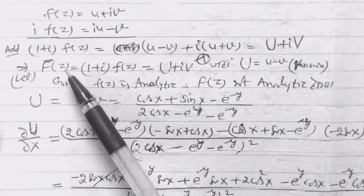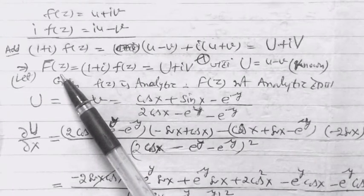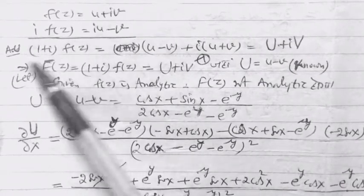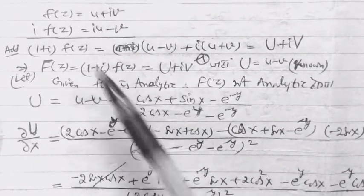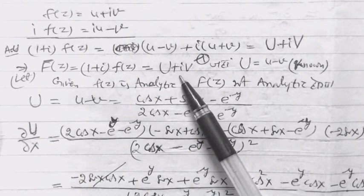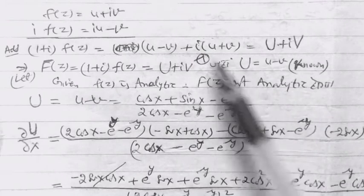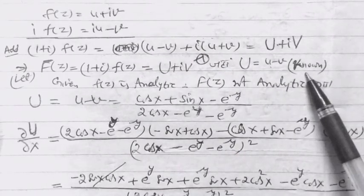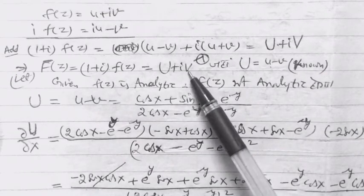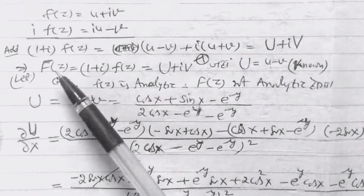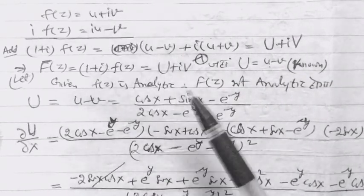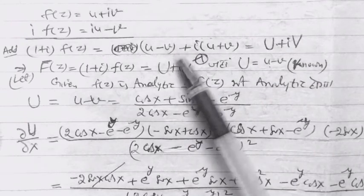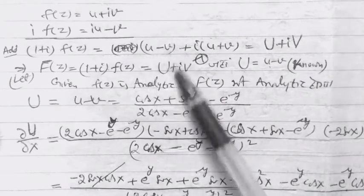So this implies capital F(z) = (1 + iota)·f(z), जिसको नाम दिया हमने capital U + iota V, where capital U = u - v जो कि हमारे को पता है। और capital V हम अभी निकाल लेंगे। इसलिए हमने u - v को capital U में set कर लिया है, so capital U is given।